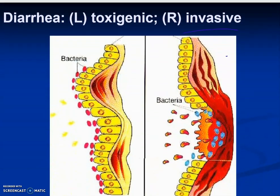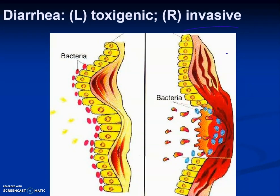Let's take a look at two different types of diarrhea. First, you could have diarrhea from toxigenic bacteria, meaning the bacteria produce a toxin that irritates the intestinal tract and causes diarrhea. In the invasive type, the bacteria invade the tissue, break through the epithelial lining, and cause ulceration. They break blood vessels and you may have bleeding.